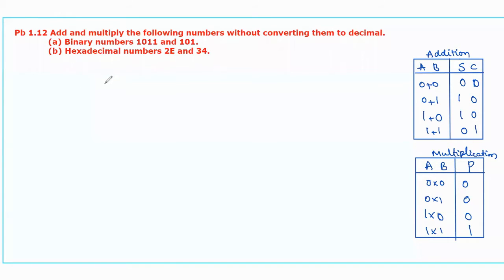Hello guys, in this video I will explain the solution for the given problem: add and multiply the following numbers without converting them to decimal. The first part of numbers are binary numbers 1011 and 101. The second part of numbers are hexadecimal numbers 2E and 34.